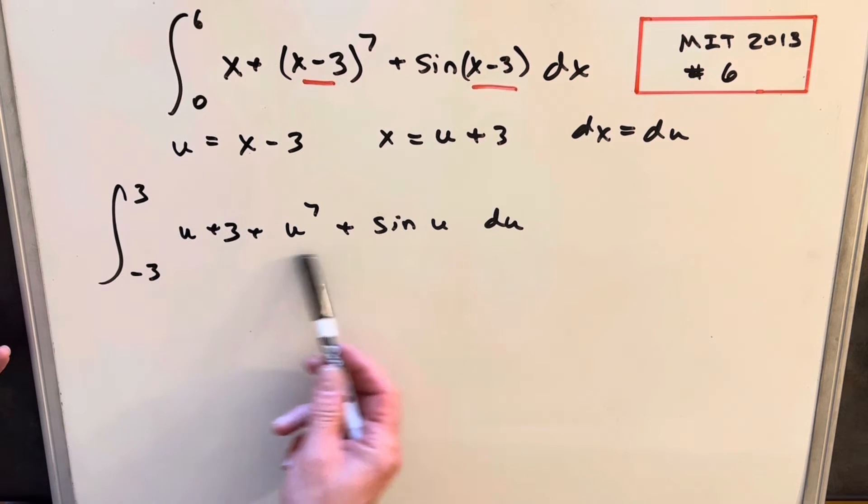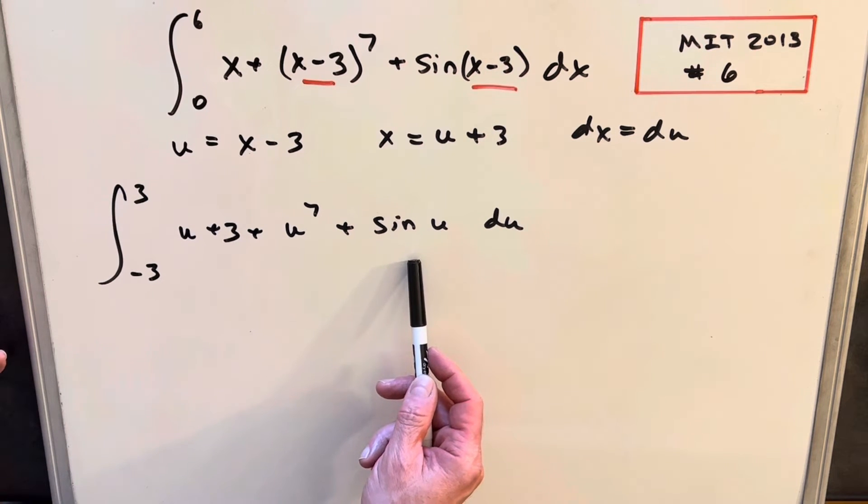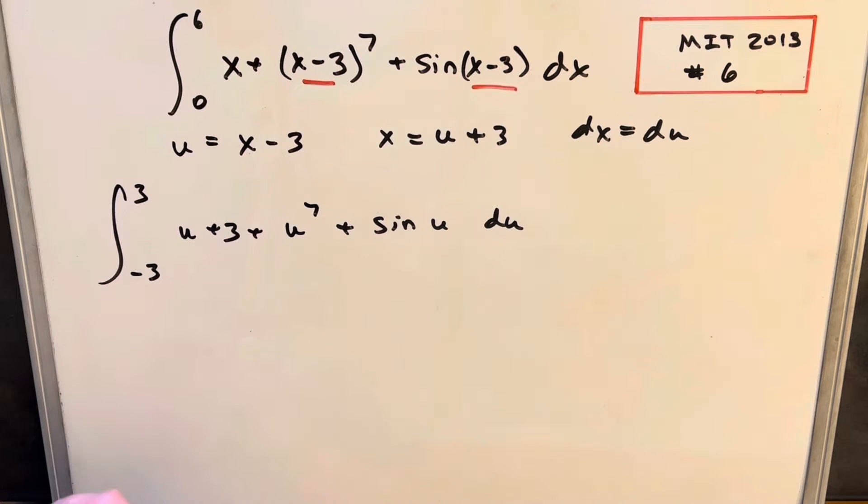And then from here, we know how to integrate each of these things, right? We could just use power rule. The integral of sine is going to be minus cosine u. So we could do it that way. But I think there's one little shortcut that we could use that's going to make it a little quicker. So let's see that.